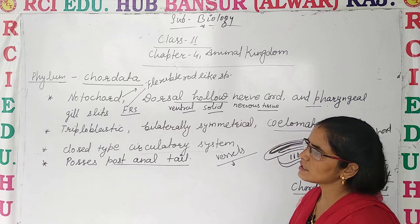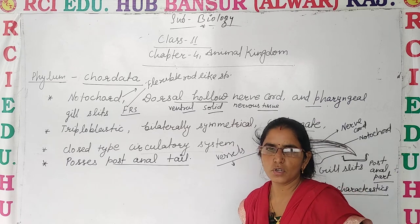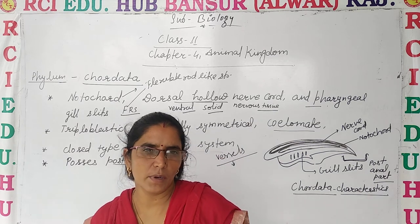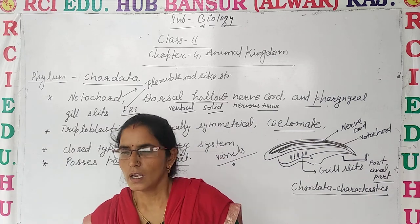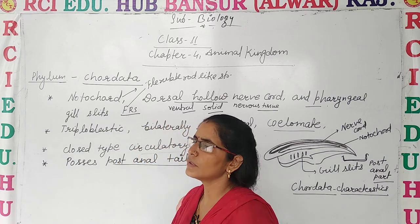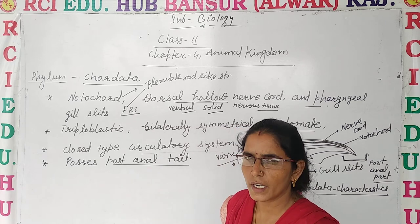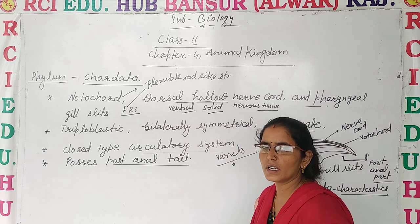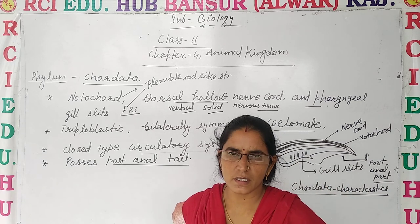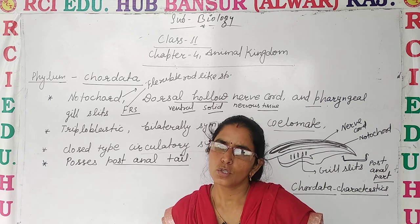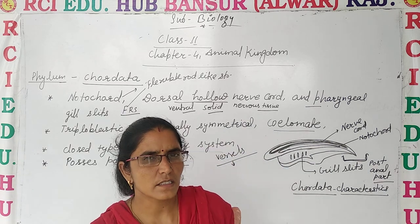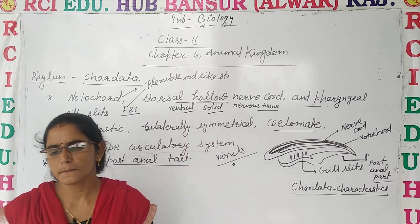Now we will discuss in the next video about the classification of chordates. Chordates are divided into: Urochordata, Cephalochordata, and Vertebrata. Please like, comment, share the video, subscribe, and have a good day!